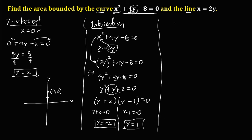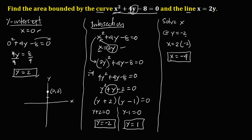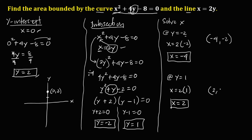To solve for x, we use the line equation x equals 2y. At y equals negative 2, x equals 2 times negative 2, so x equals negative 4. The coordinate is (negative 4, negative 2). At y equals 1, x equals 2 times 1, so x equals positive 2. The coordinate is (positive 2, 1).